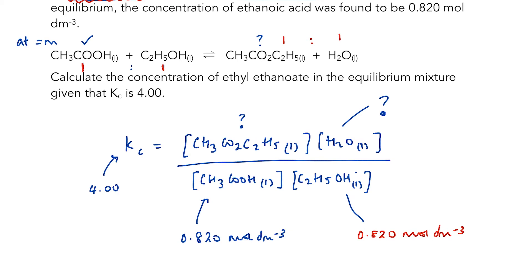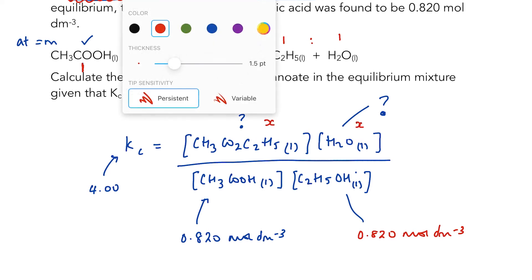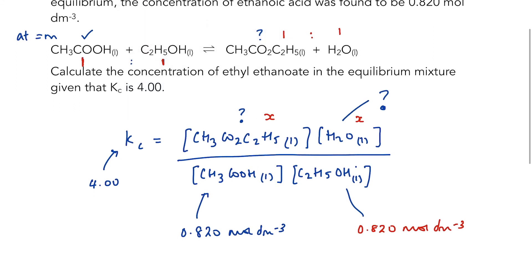So however many moles of the ester I've got, I've got the same number of moles of water. It's the same number, or in this case, the same letter. So both of those can be x. Now I have got enough information to solve this problem.